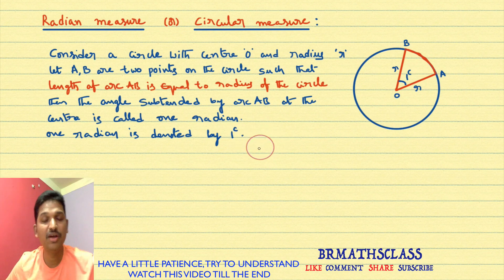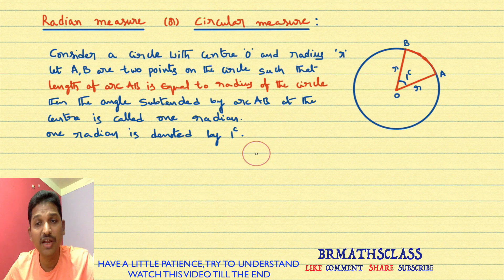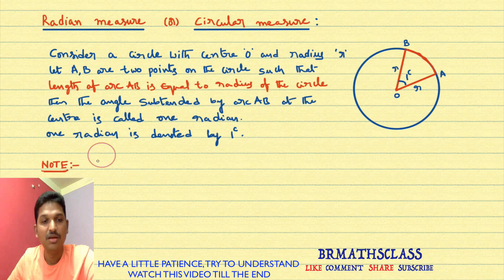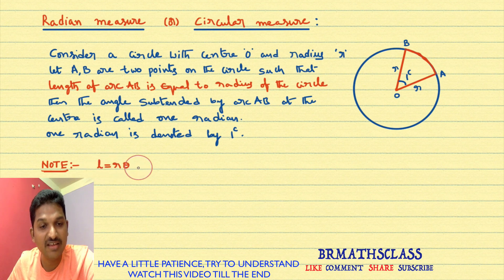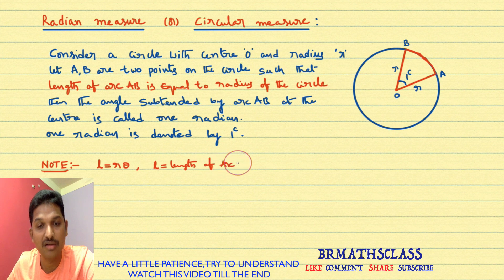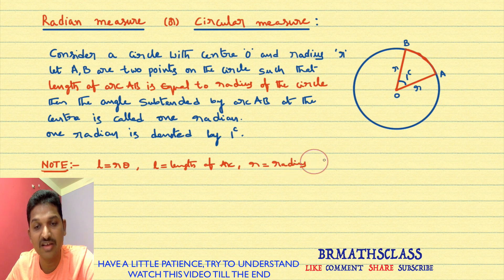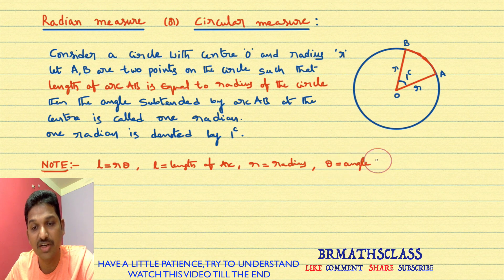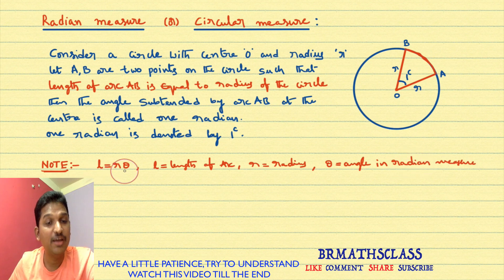This is the definition of radian measure. Now we will learn a very very important formula: L equal to R theta. In the next class, I will do the proof of L equal to R theta. Here, L is the length of arc, R is the radius of the circle, and theta is the angle in radian measure.